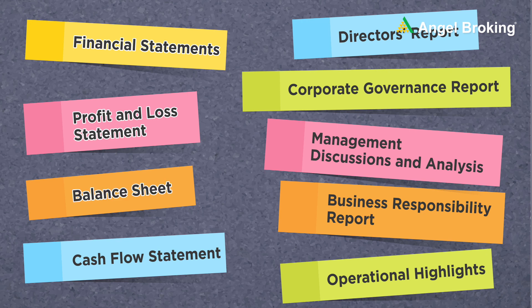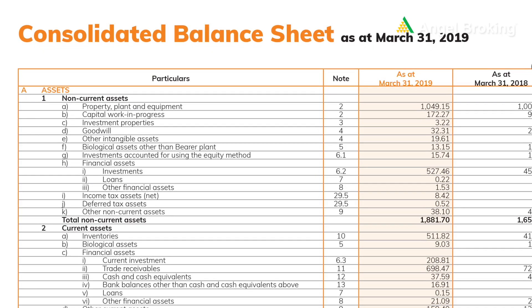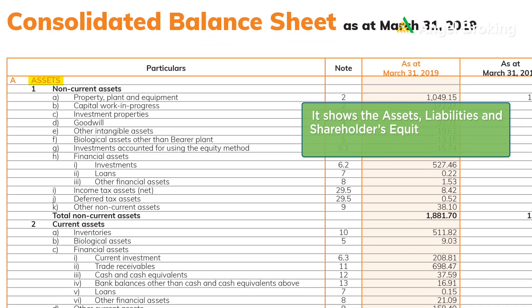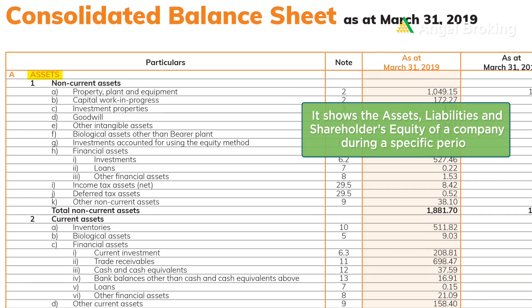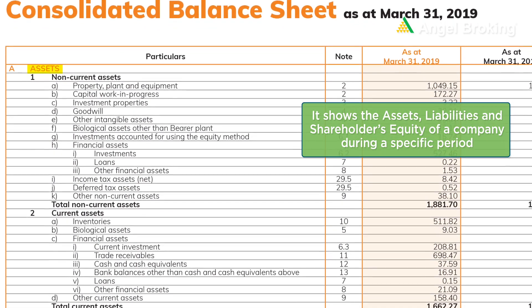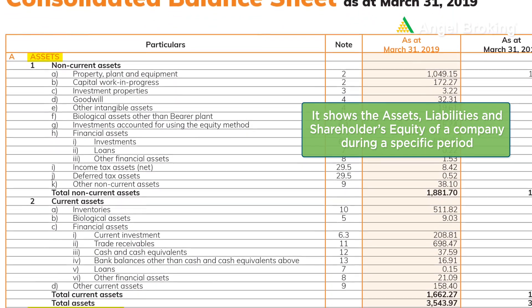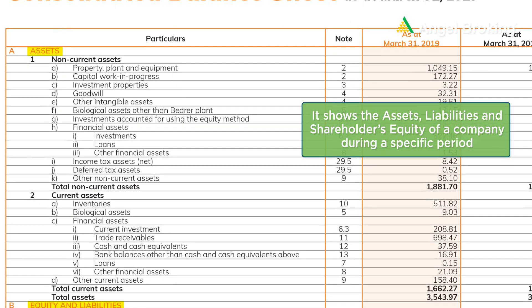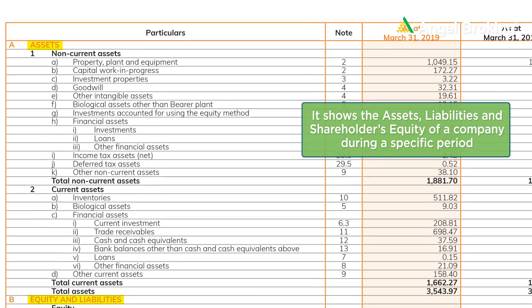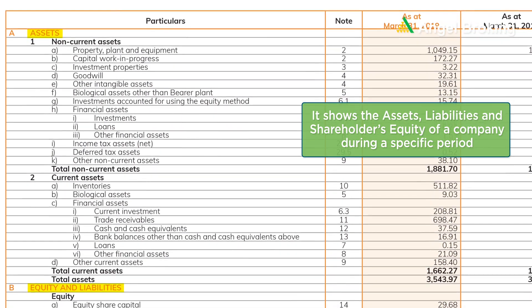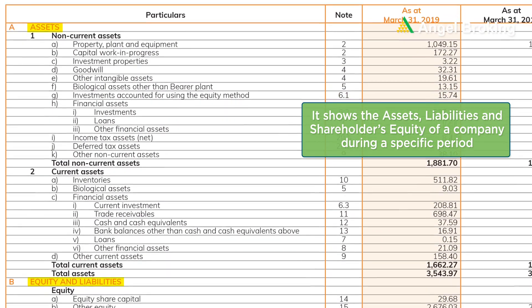Here is how a balance sheet looks. It shows the assets, liabilities, and shareholders' equity of a company during a specific period. With the help of a balance sheet, you can know how effectively a company's management uses its resources.